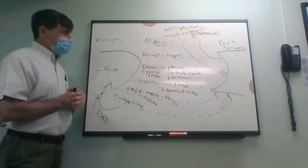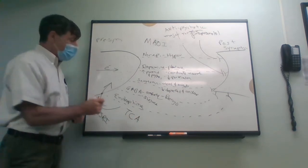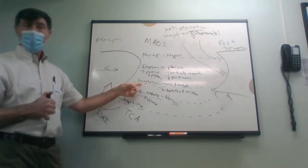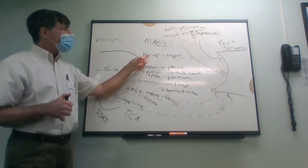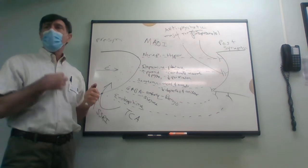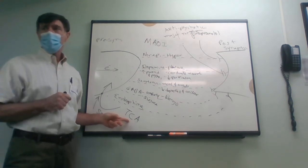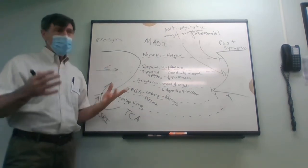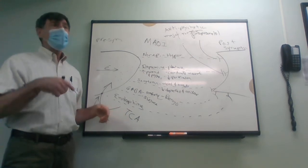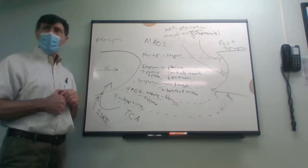Around the 1960s, tricyclic antidepressants — TCAs — came out. They block the reuptake of norepinephrine, dopamine, and serotonin, giving some mood elevation. But norepinephrine and dopamine can jack up your heart rate or cause cardiac conduction abnormalities. Tricyclic antidepressants are potentially lethal in overdose due to cardiac conduction abnormalities. They also cause a lot of anticholinergic side effects: can't see, can't pee, constipation.